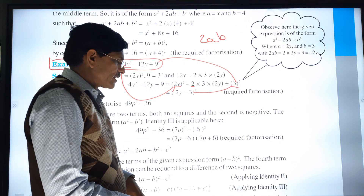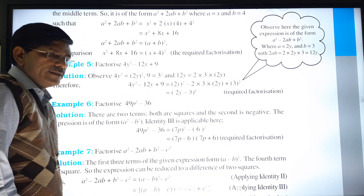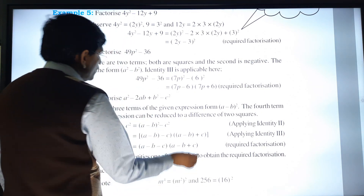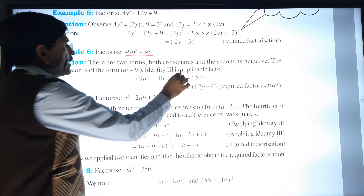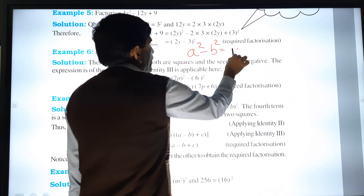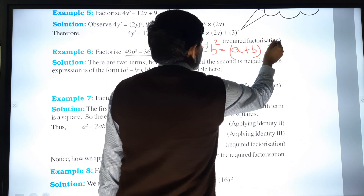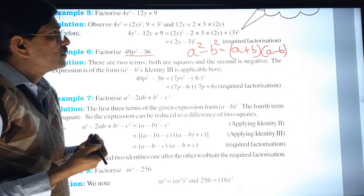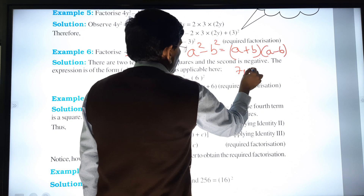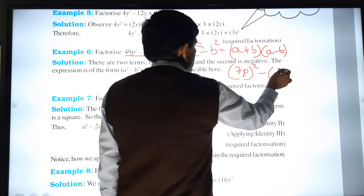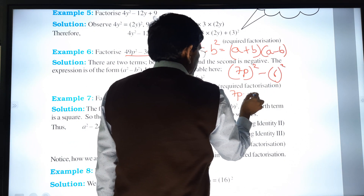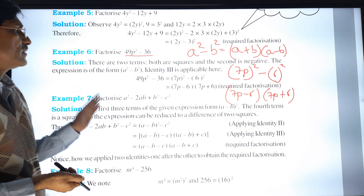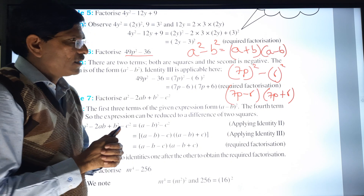This is the second identity example. Now we go for the third identity: (a+b)(a-b) = a² - b². The example is 49p² - 36. We write (7p)² - (6)², so the answer is (7p + 6)(7p - 6).